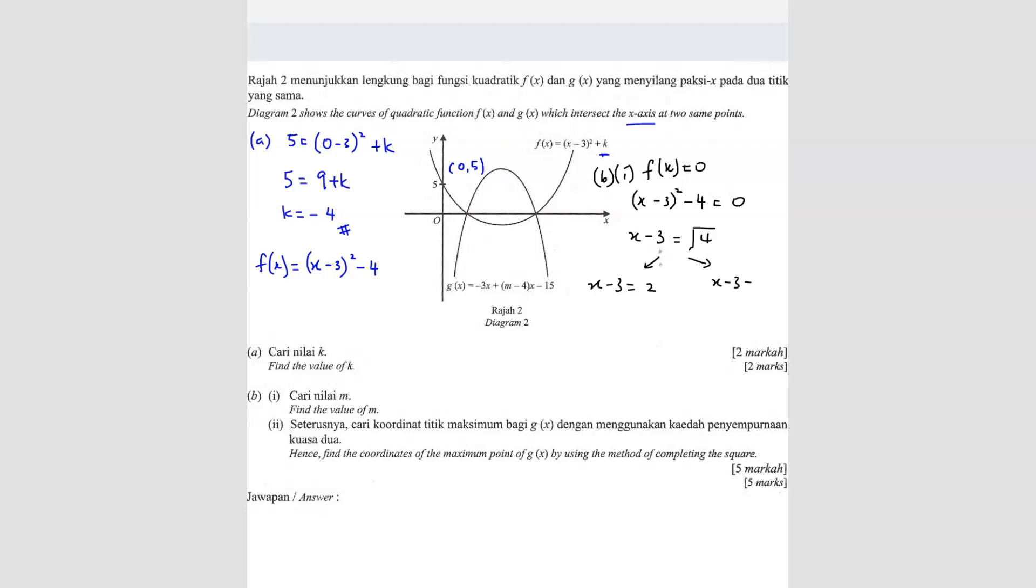One more is x-3 equals -2. Square root, you've got plus minus. So x equals 5 and also x equals 1. So this one is going to be 1, this is going to be 5. So it's up to you which one you want to use. I think we can use 1, it seems much easier.